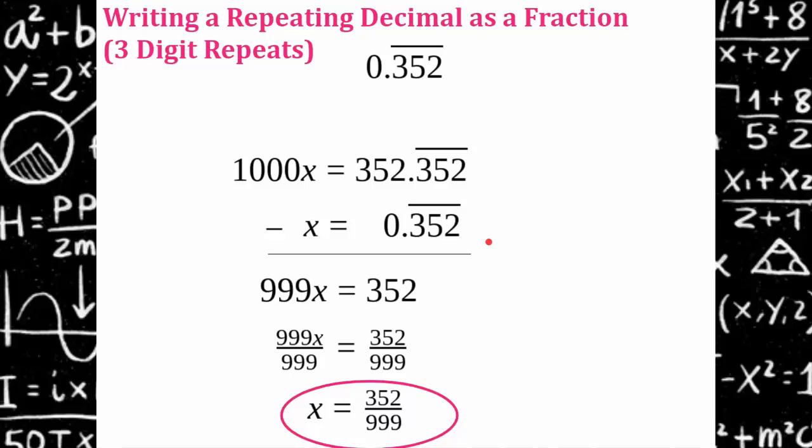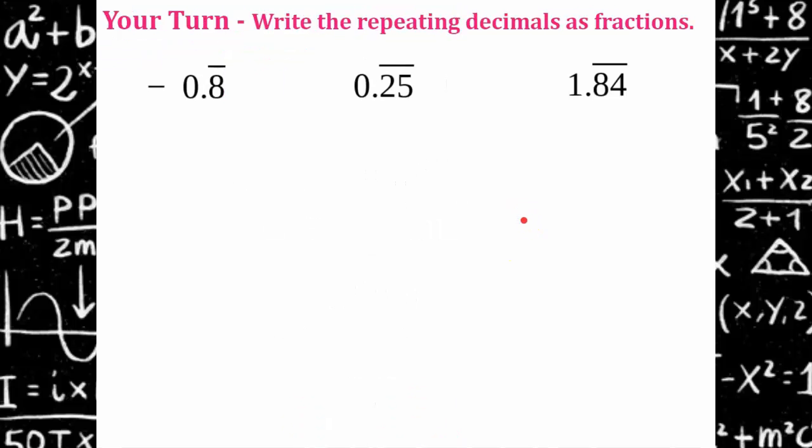Check that on your calculator. And see if your calculator, when you do 352 divided by 999, do you get this repeating decimal? So hopefully by now you've seen a pattern that will force you to do all this algebra. So I'd like you to pause here and I'd like you to try these three on your own and come back and hit play to check your work.